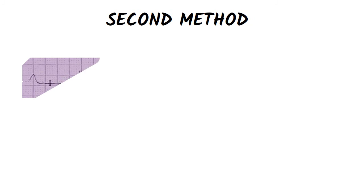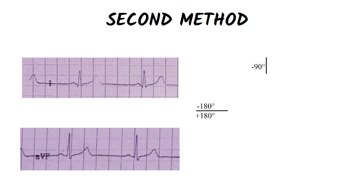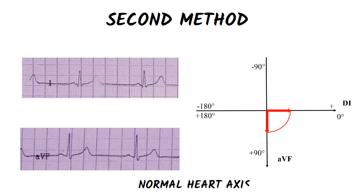On this ECG, the QRS complex is positive in both lead 1 and AVF. It means the axis is somewhere between 0 and plus 90 degrees, so it is normal.